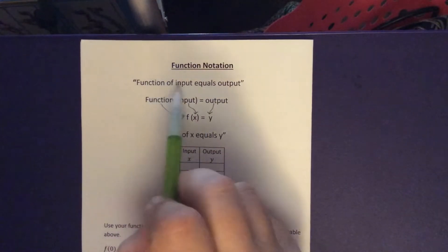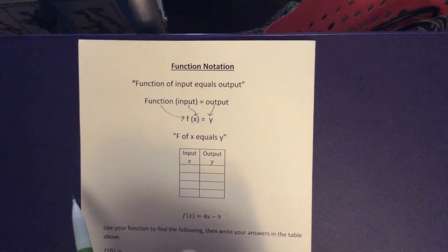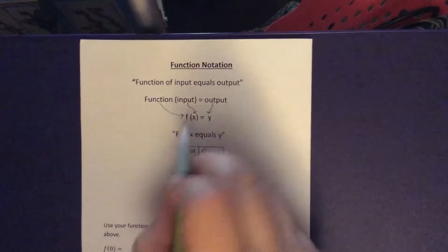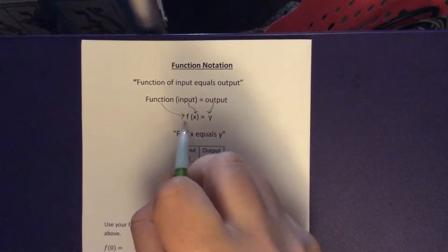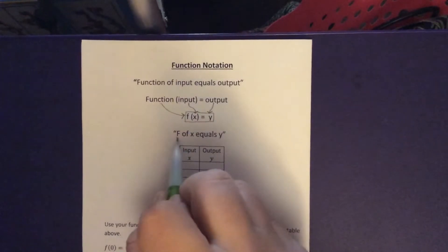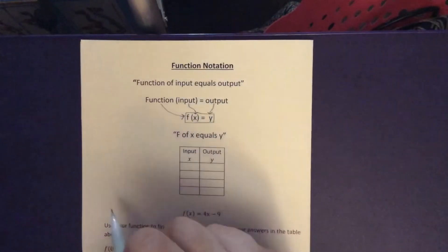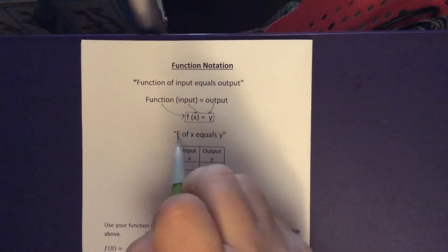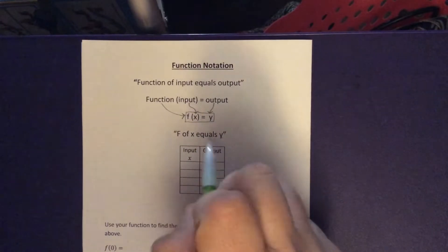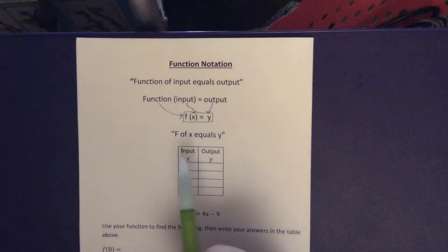So function of input, so of is our parentheses, which is our multiplying, we talked about that, equals output. So the way we read this notation here is f of x equals y. So because it's f parentheses x, that is pronounced f of x and then equals y. So when you're trying to read this out loud or when I'm saying it out loud in class, that is what I will be saying.